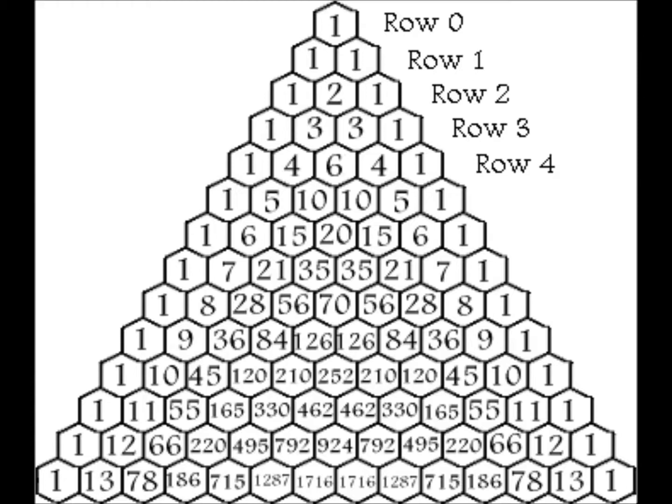A number in the triangle can also be found using nCr — n choose R — where n is the row number and R is the element position in that row. For example, in row 3: 1 is the zeroth element, 3 is element number 1, the next 3 is the second element, and the last 1 is the third element.